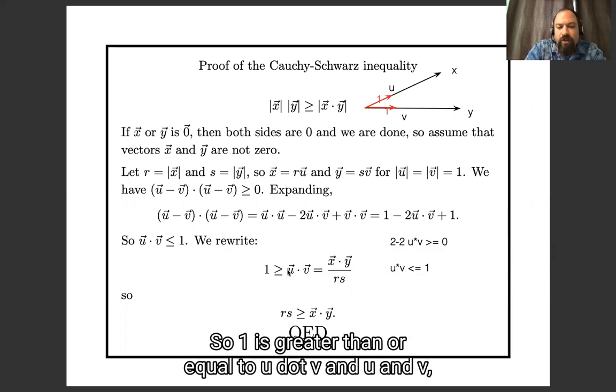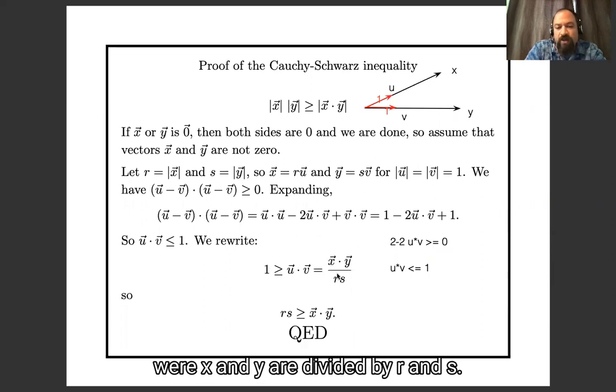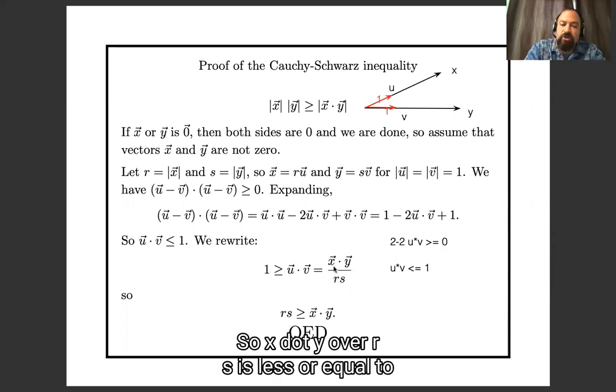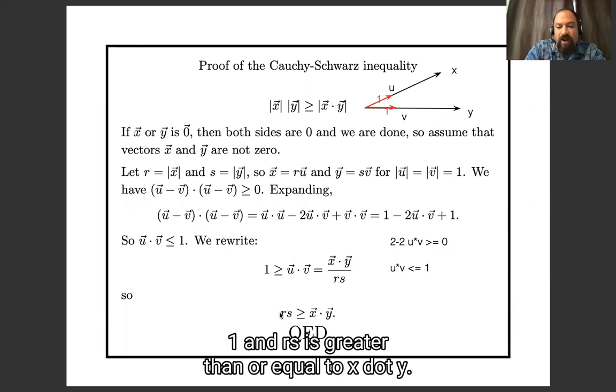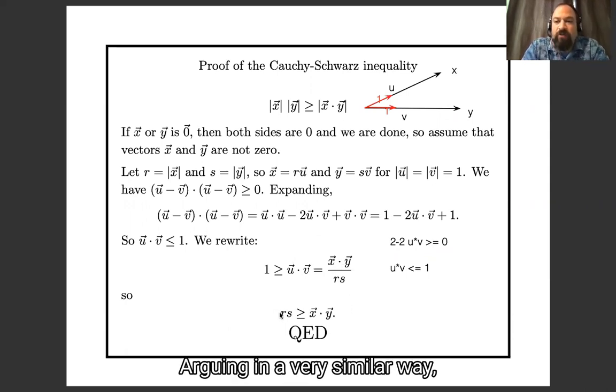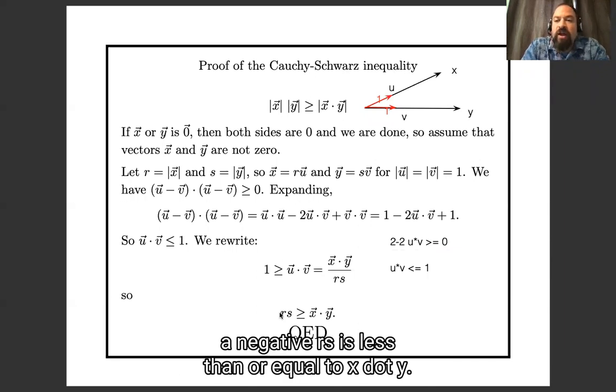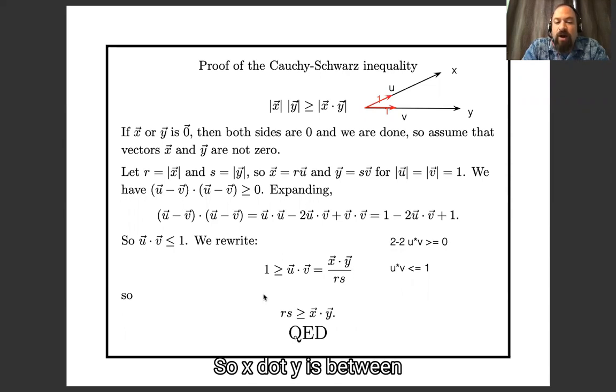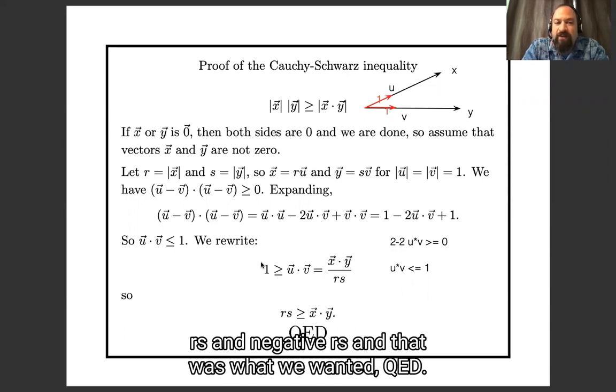So 1 is greater than or equal to u dot v. And u and v were x and y divided by r and s. So x dot y over rs is less than or equal to 1. And rs is greater than or equal to x dot y. Arguing in a very similar way, negative rs is less than or equal to x dot y. So x dot y is between rs and negative rs. And that was what we wanted, QED.